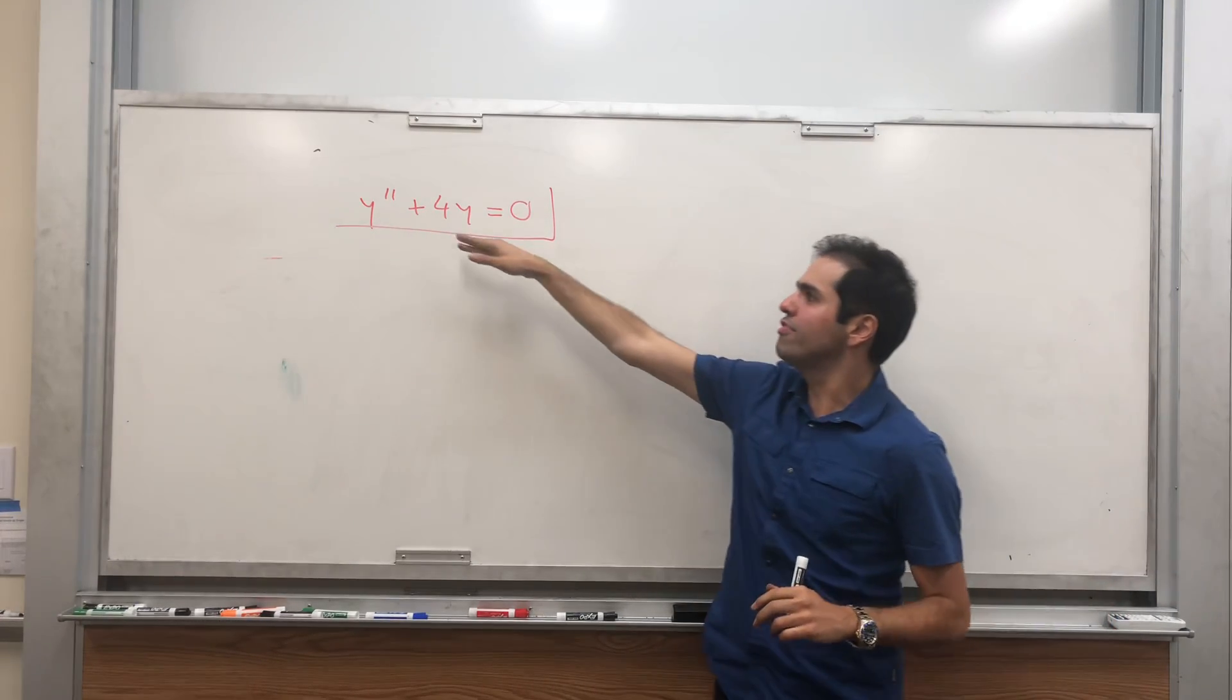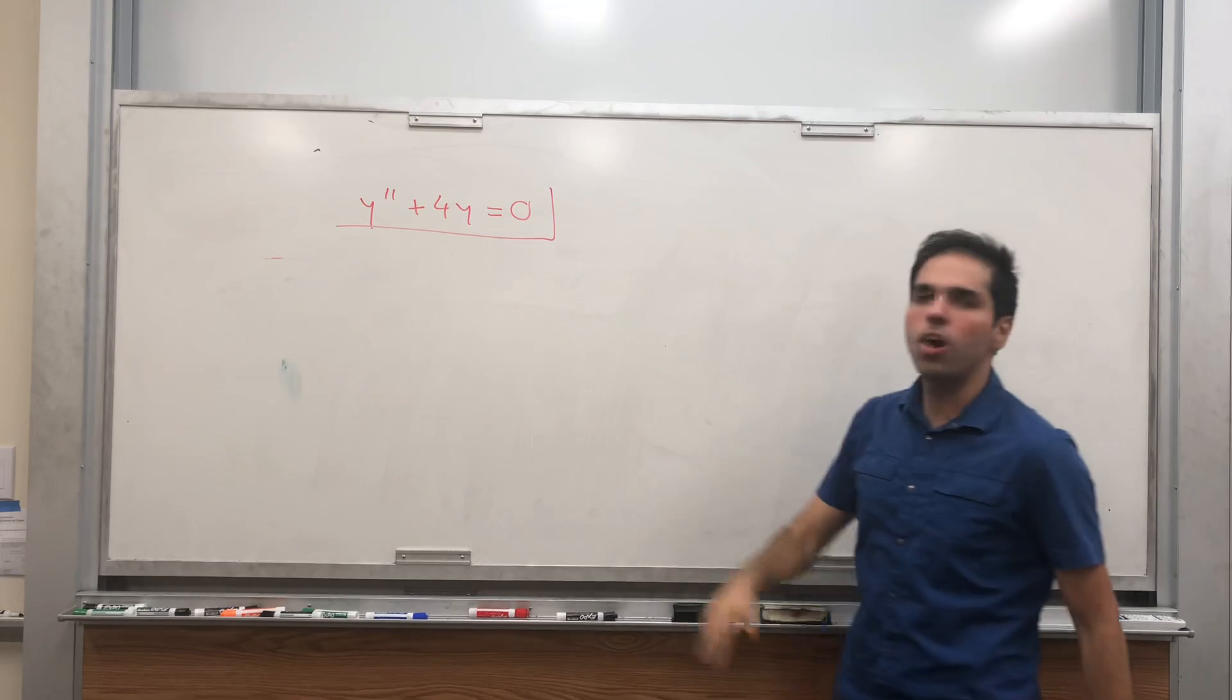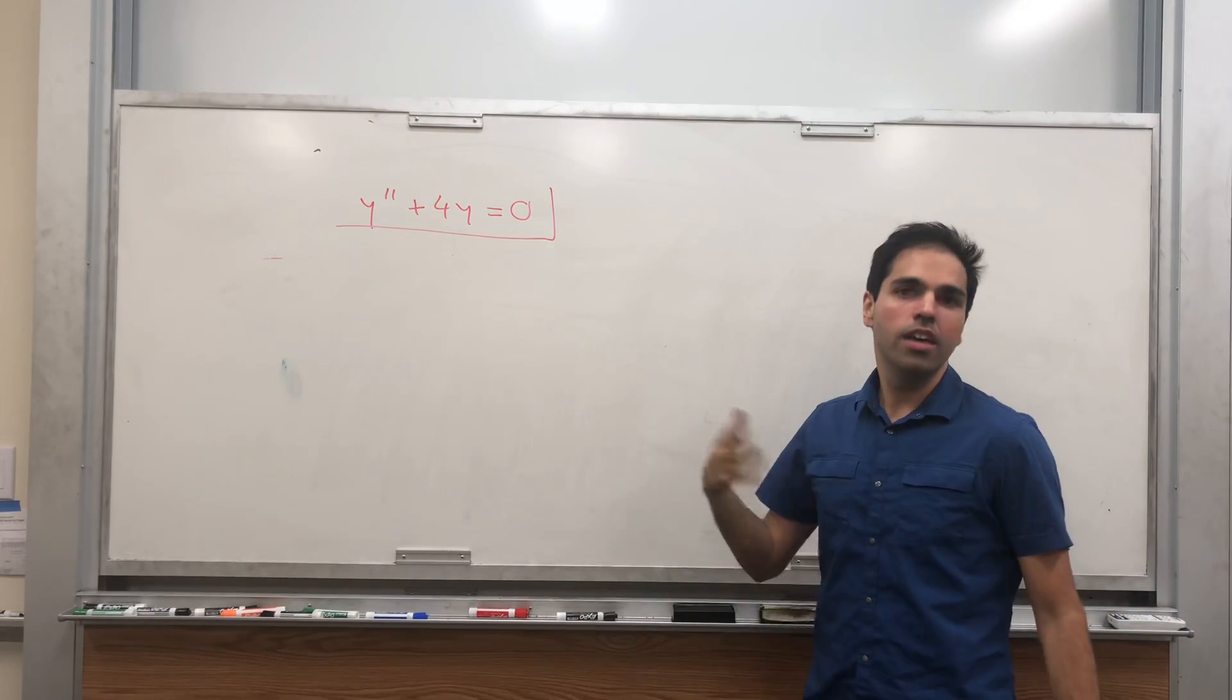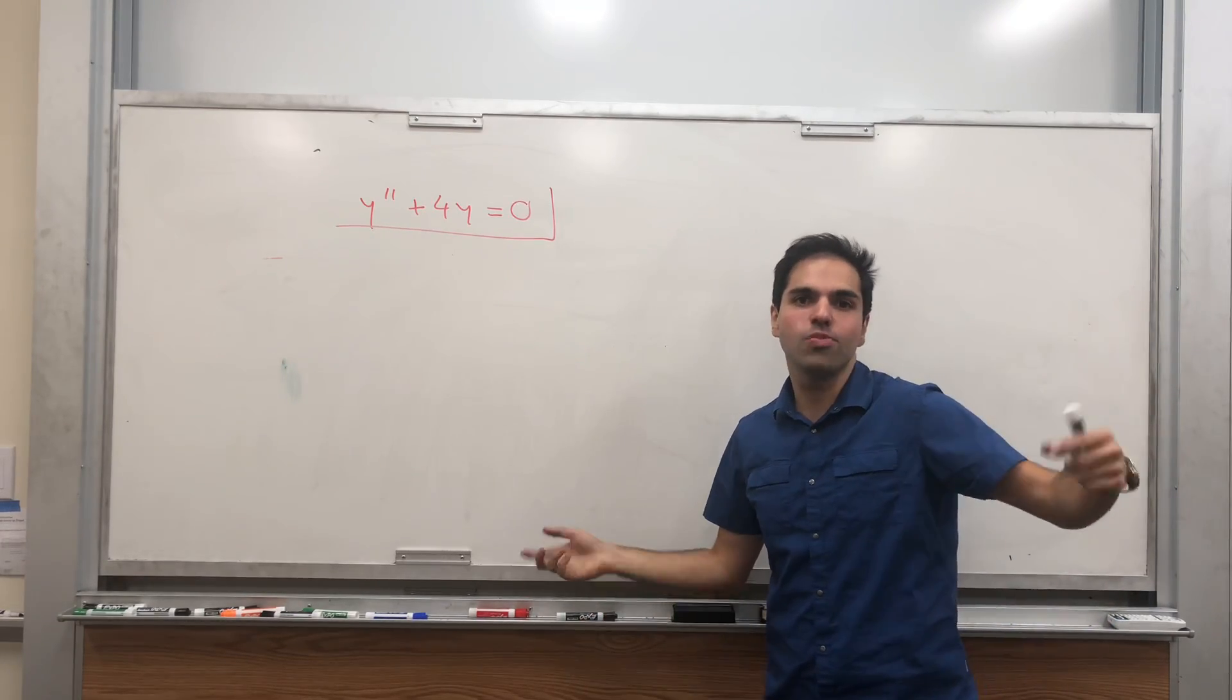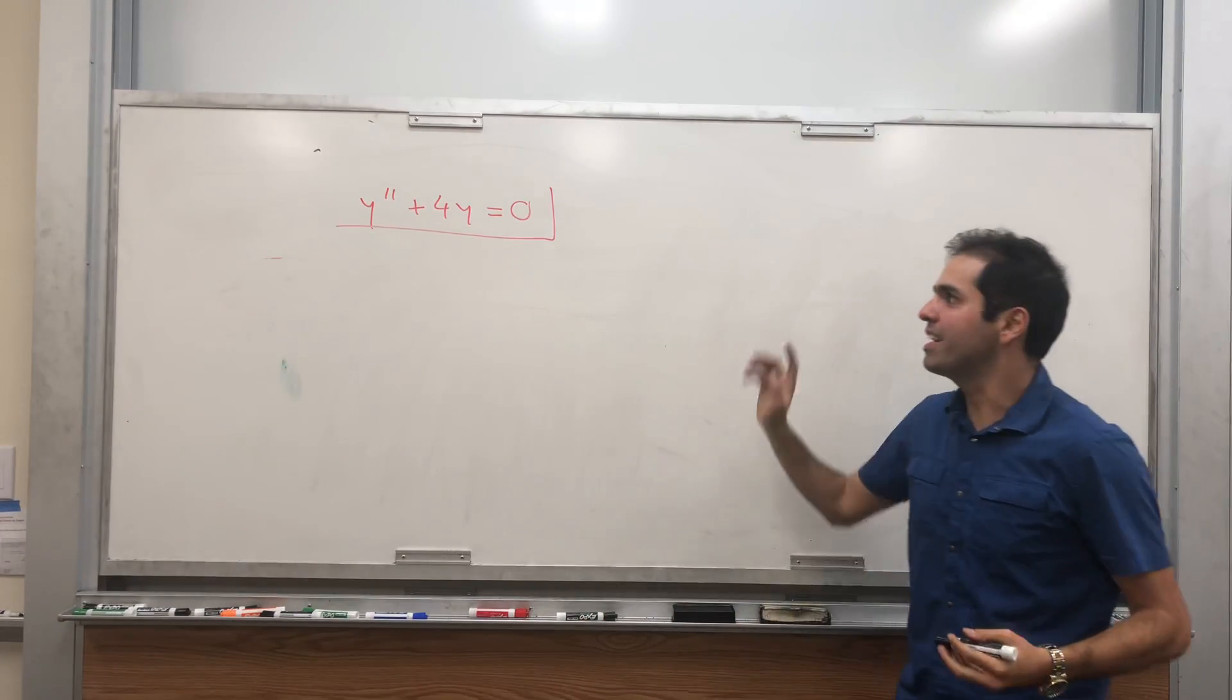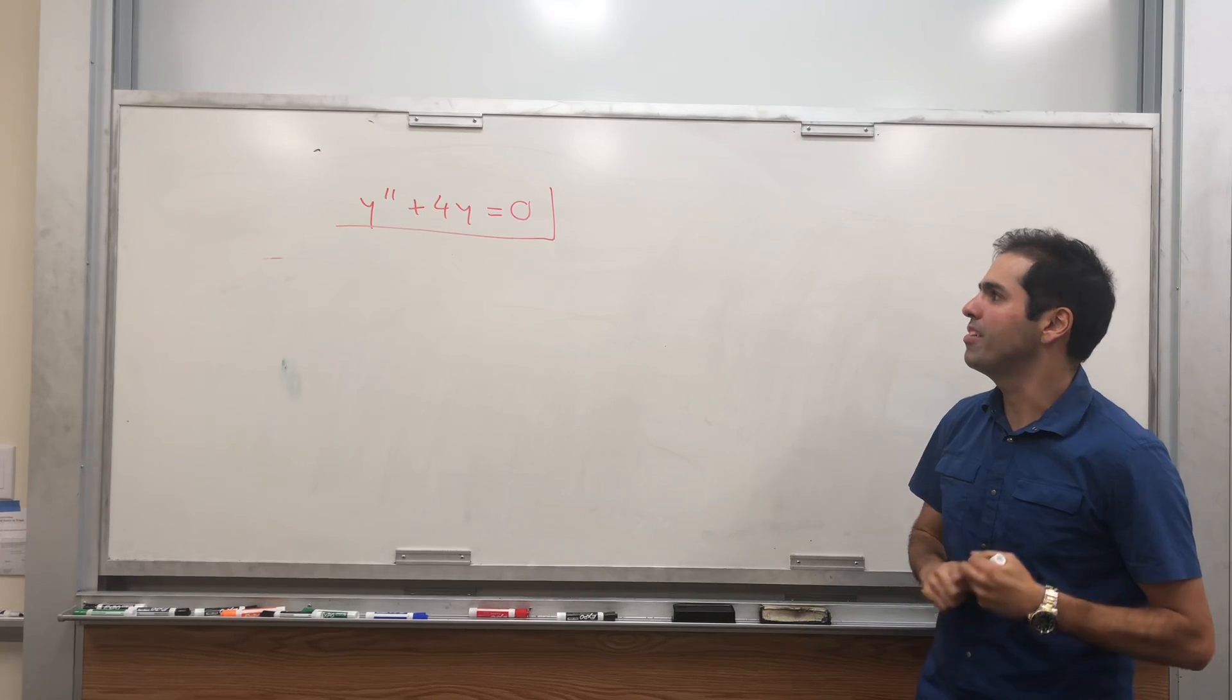And for sake of simplicity, let's just do y double prime plus 4y equals zero. If the auxiliary equation has a real part as well, it's almost the same technique. But again, just to keep it simple, let's do that.